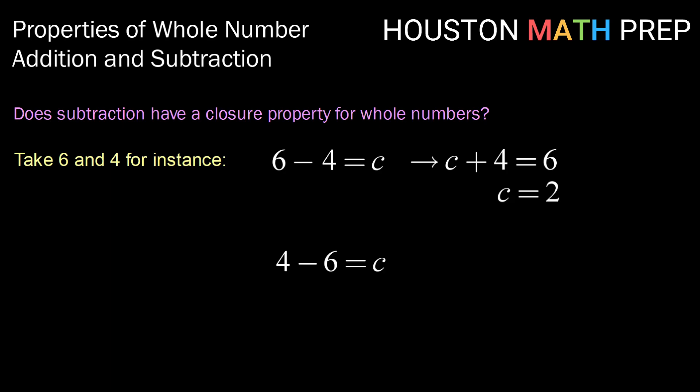That is a whole number. Now if we flip them around, 4 minus 6 equals c, by our definition, that would imply that c plus 6 equals 4. Since there is no such number c in the set of whole numbers, which again is 0, 1, 2, 3, and so on, then subtraction does not have the closure property for whole numbers. Because I can take two whole numbers, 4 and 6, try to perform subtraction and not end up back in the whole numbers. So no, subtraction is not, or the whole numbers are not closed on subtraction.